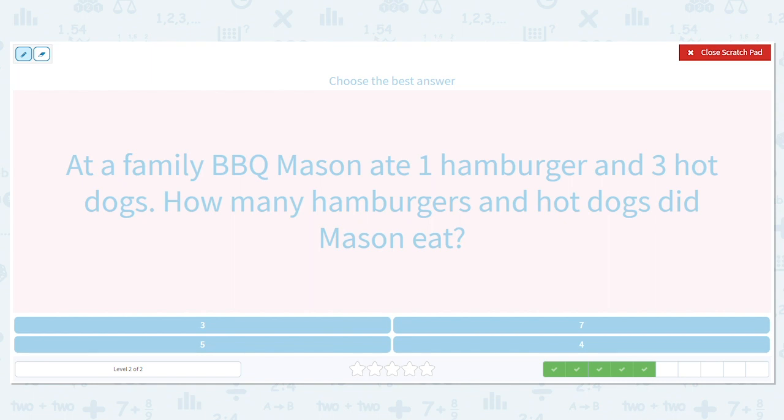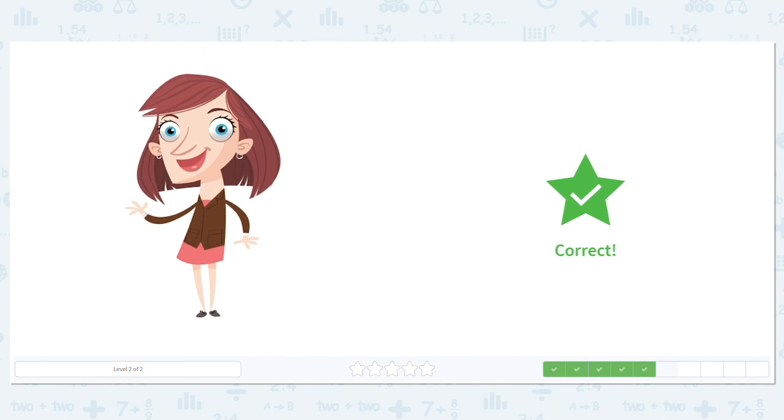We want to know how many in all did he eat of hamburgers and hot dogs. Okay. Again, that tells us we're adding. So one hamburger and three hot dogs. So what's my addition sentence? One plus three equals. What does it equal? One more after three equals four. So he ate a total of four items.